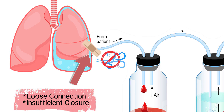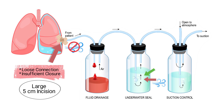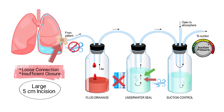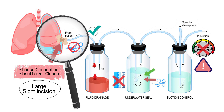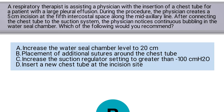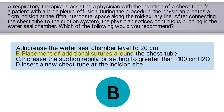This should be followed by applying an occlusive dressing to ensure a proper seal, which will stop the bubbling in the water seal chamber. Adjusting the water level in the seal chamber won't resolve an air leak and it's not a standard intervention for this issue. Increasing suction pressure won't fix the source of the air leak and could potentially cause lung injury. There's no indication that the existing chest tube is malfunctioning; therefore, addressing the air leak at the current site is the appropriate step. The correct answer is B: Placement of additional sutures around the chest tube.